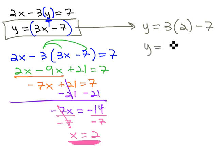Well, order of operations, 3 times 2 is 6, minus 7. Y, then, must be equal to negative 1.